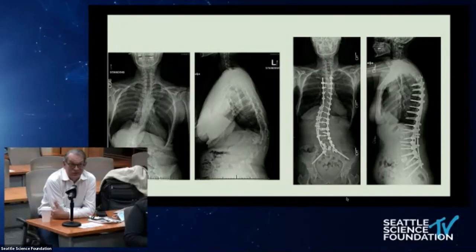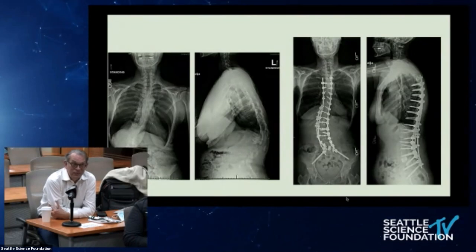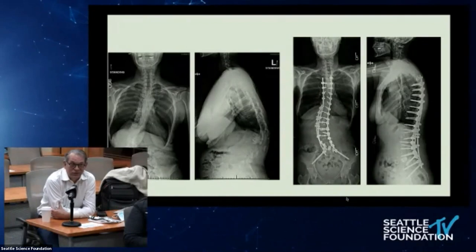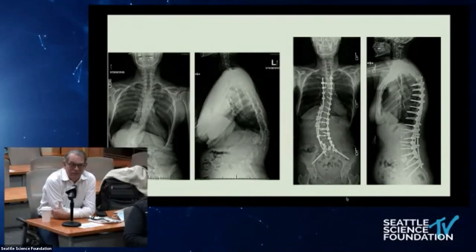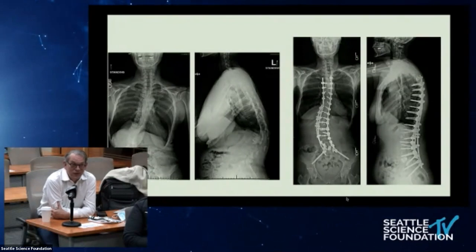Schwab responds he doesn't think SI joint fusion is the answer. He's seen many patients with attempted SI fusions who are very unhappy — it's very hard to fuse the SI joint. The iliac screw is a backup screw that functionally only needs to be there for six to eight months until consolidated fusion occurs. When iliac screws fail, they tend to fail early as in this scenario. An SI joint fusion here would probably have created more issues.